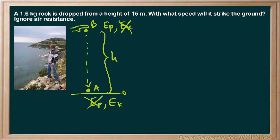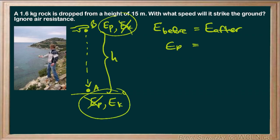From an equation point of view, we can say E_before equals E_after. In the before we have potential energy, and in the after we have kinetic energy. We're looking for velocity — speed and velocity are the same thing here since we don't need to specify direction. So: potential energy mgh equals kinetic energy one-half mv squared.